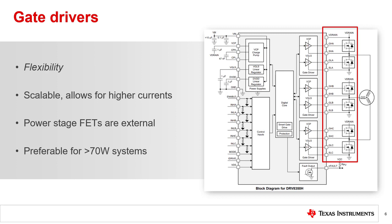In this gate driver block diagram, we can see how the internal gate drive circuit connects to three half-bridges. Each of the six FETs may be switched by applying gate-to-source voltage in accordance to control inputs. Some gate drivers, like the one shown, feature smart gate drive architecture. This allows designers to adjust parameters such as the gate voltage slew rate without board modifications. Smart gate drive further increases the tunability of these parts during prototyping.